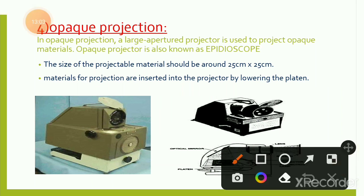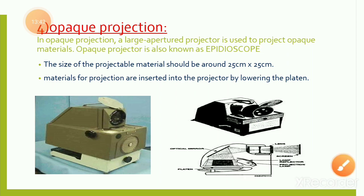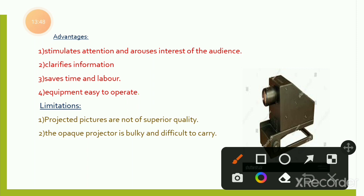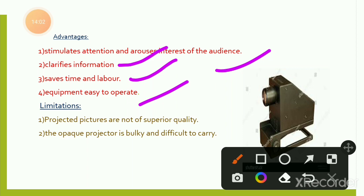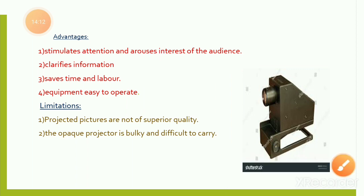Opaque projection: in opaque projection, a large impaired epidiascope projector is used to project opaque material. The opaque projector is also known as EPIdiascope. The size of projectable material should be around 25×25 cm, inserted into the projector by lowering the platen. Advantages: stimulates attention and arouses interest of audience; clearly represents information; saves time and labor; equipment is easy to operate. Limitations: projected pictures are not of superior quality; the opaque projector is bulky and difficult to carry.